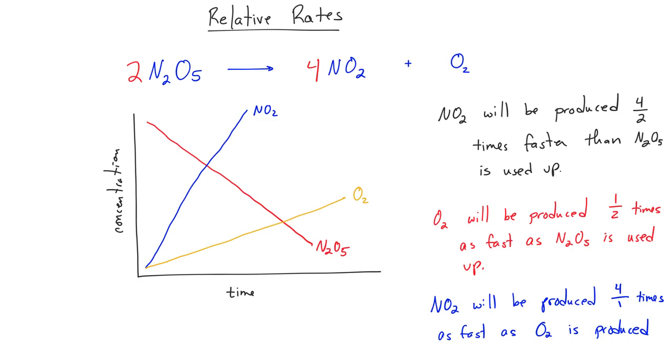Finally, we can say that NO2 will be produced four times as fast as O2 is produced. Again, we can't determine the actual rate until we do experimentation, but if we know the rate of disappearance of N2O5 or appearance of NO2 or O2, we can use these numbers to calculate the rate for any other species.